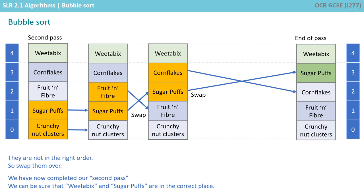We've now completed our second pass, and we can be sure that Weetabix and Sugar Puffs, which has just bubbled up to the top, are in the correct place. So, we now have to do a third pass.